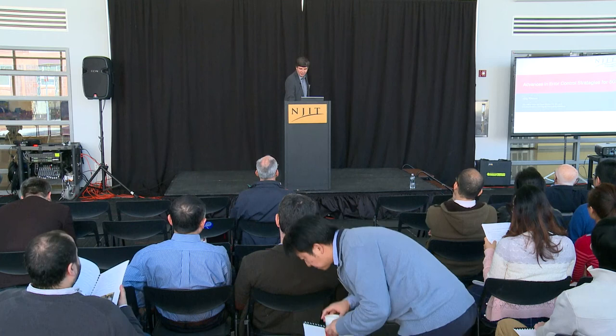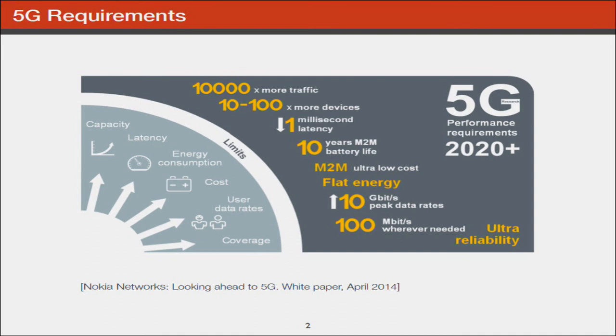Before talking about error control codes, we have to first talk about the requirements for 5G. It's projected that we have 10,000 times more devices connected than right now in 4G. The latency is reduced by factor 10 to 1 millisecond. The battery life for mobile to machine communication should grow by factor 10 to 10 years. Also, the data rate goes up significantly to 10 gigabits per second, compared to 100 megabits in fourth generation. This is a big challenge to the hardware.